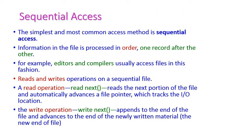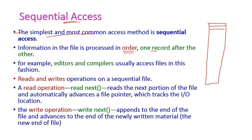The first one is sequential file access. This is the very simplest and most common access method. Here the information will be stored in order, that is one record after another record. For example, in this sequential file, the records will be loaded one after another, ordered as 0, 1, 2, 3, 4, and so on. N number of records will be stored in this sequential file.